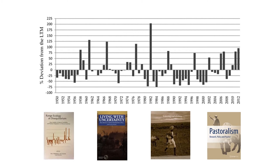The book on screen, Rangeland Ecology at Disequilibrium, and the follow-on Living with Uncertainty, were both attempts to link ecological debates that had been going on for a while with development debates around pastoralism. To some extent they had an impact in certain quarters. People have referred back to this debate about new range ecology ever since.